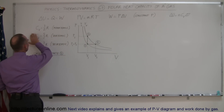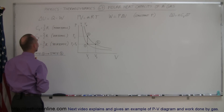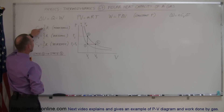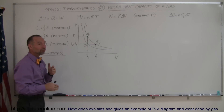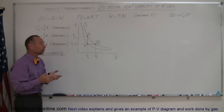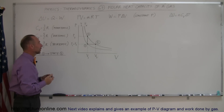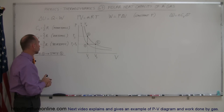Here we have the three C sub V values for monatomic, diatomic, and triatomic gases, which are approximately equal to three-halves R, five-halves R, and seven-halves R. These are related to the number of degrees of freedom the molecules have in their ability to absorb kinetic energy.